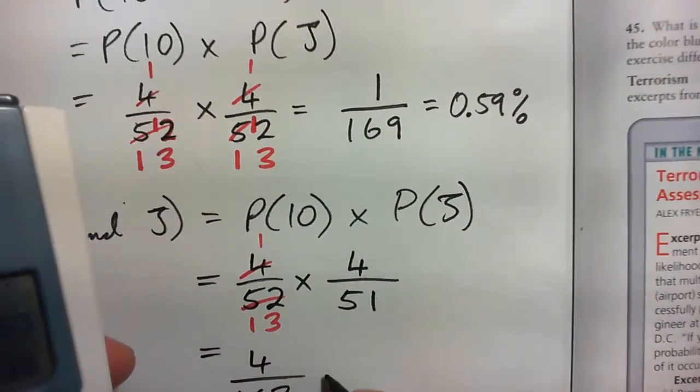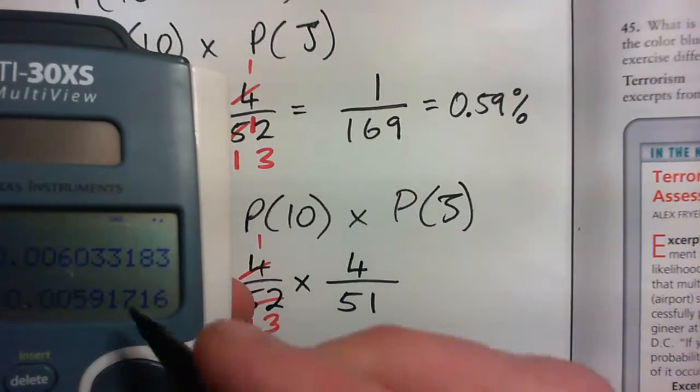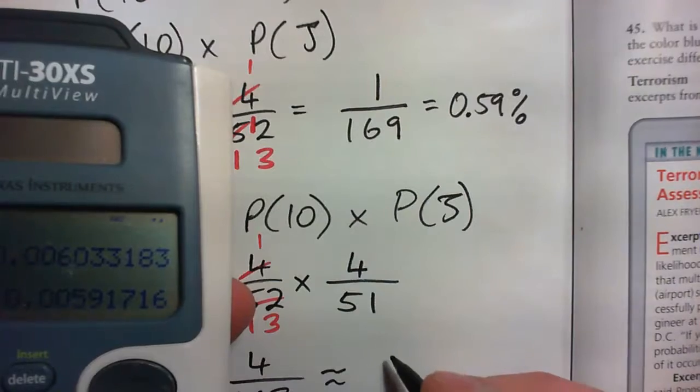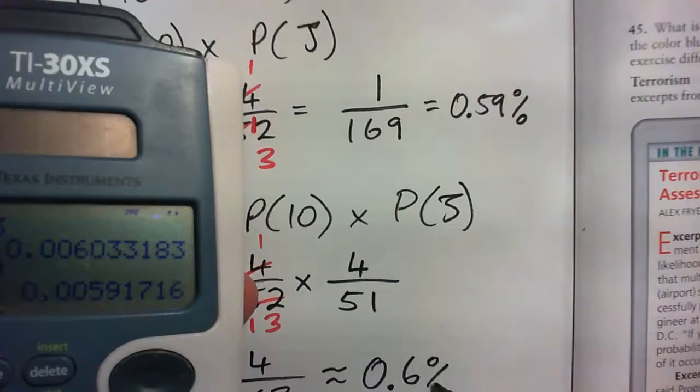And 4 over 663 is about... move the decimal point over two spots, it's about 0.6% chance.